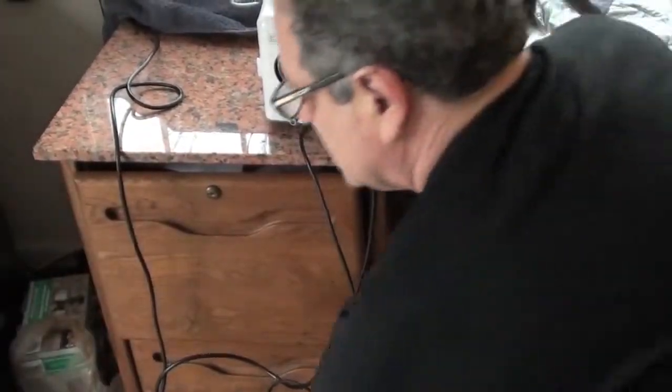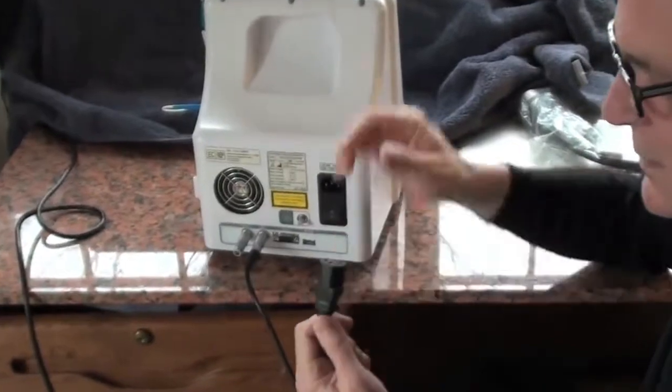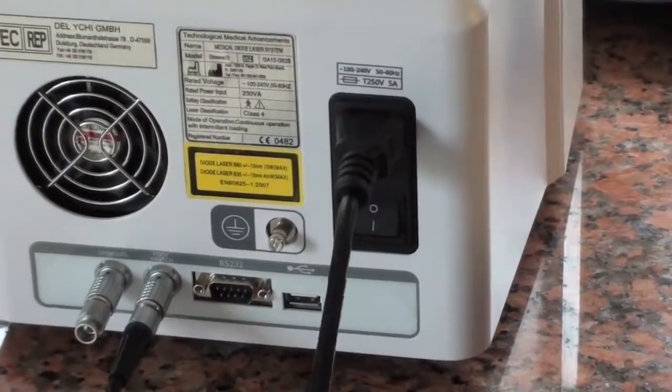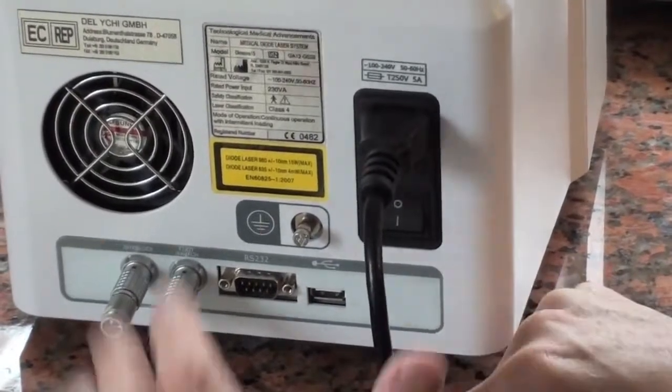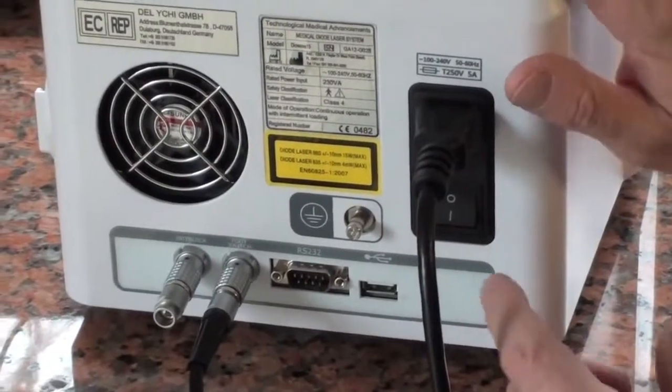The last thing that needs to be plugged in - remember everything is turned off - is the power cord. Slips in, make sure it's tight. This is a typical classical power cord that you use in a computer. So everything is set up: the interlock, the foot pedal, and the power cord.